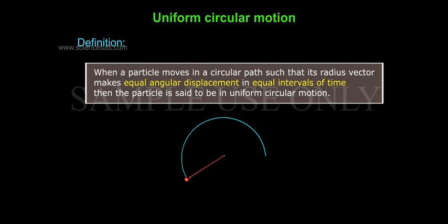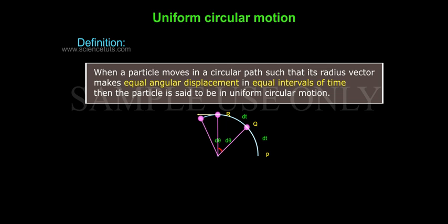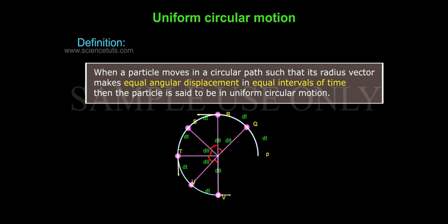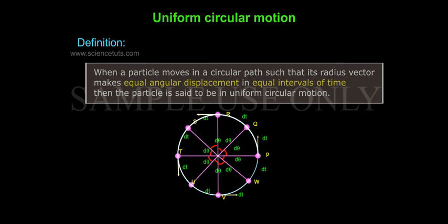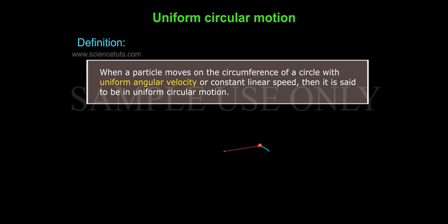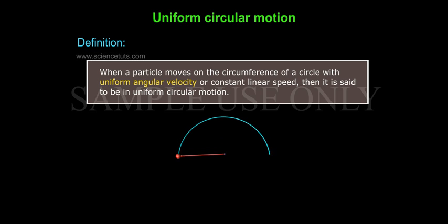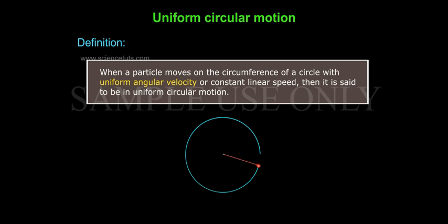What is uniform circular motion? Definition: when a particle moves in a circular path such that its radius vector makes equal angular displacement in equal intervals of time, then the particle is said to be in uniform circular motion. Or, when a particle moves on the circumference of a circle with uniform angular velocity or constant linear speed, then it is said to be in uniform circular motion.